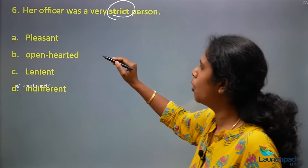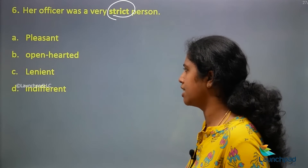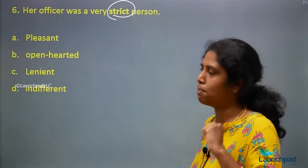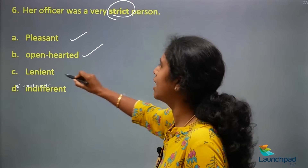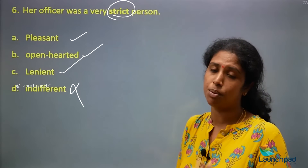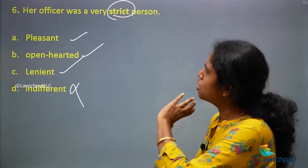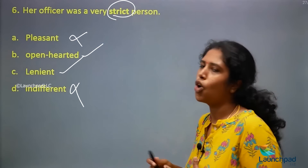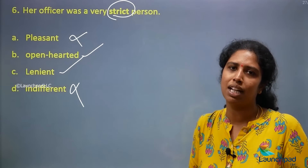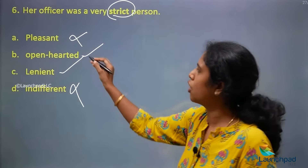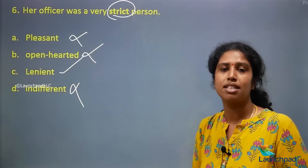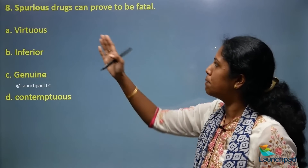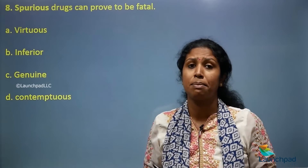Next question: 'Her officer was a very strict person.' Find the opposite for 'strict.' Options: pleasant, open-hearted, lenient, indifferent. The positive tone words are pleasant, open-hearted, and lenient. 'Indifferent' cannot be a right answer. 'Pleasant' — its opposite is unpleasant, so eliminate. 'Open-hearted' — its opposite is close-hearted, so eliminate. The direct opposite word for 'strict' is 'lenient.' Option C is the right answer.